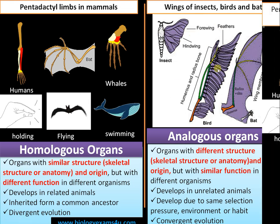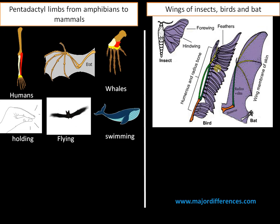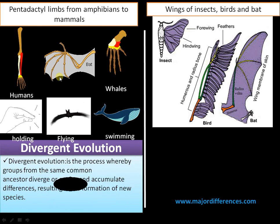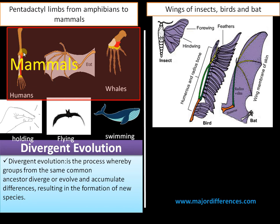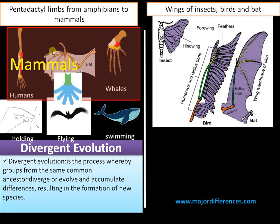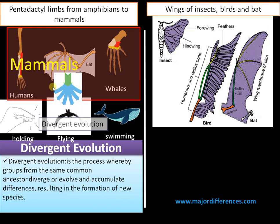Now moving on to the second topic — divergent and convergent evolution. Divergent evolution is a process. Taking this example: humans, bats, and whales are all mammals, so they have a common ancestry and are related groups. These organisms diverge or evolve and accumulate differences, often forming new species. This process is called divergent evolution.